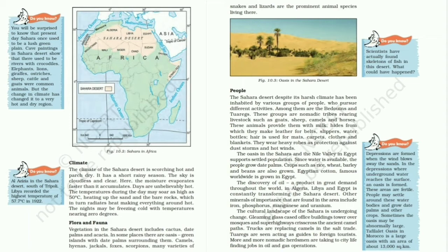The Sahara Desert is sparsely populated. Nomadic tribes like the Bedouin and Tuaregs rear sheep, goats, horses, and camels. These animals provide them with milk, hide, and hair. A number of products like leather belts, slippers, and water bottles are made from the hide. Mats, carpets, clothes, and blankets are made from hair. The women make these things at home, while the men are herders. These tribes have temporary tents and move from place to place.